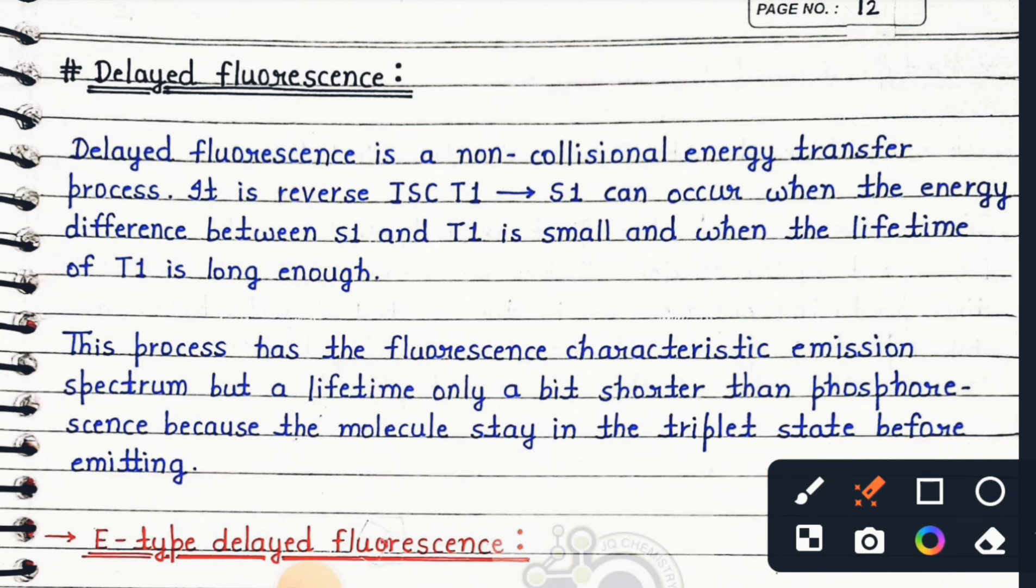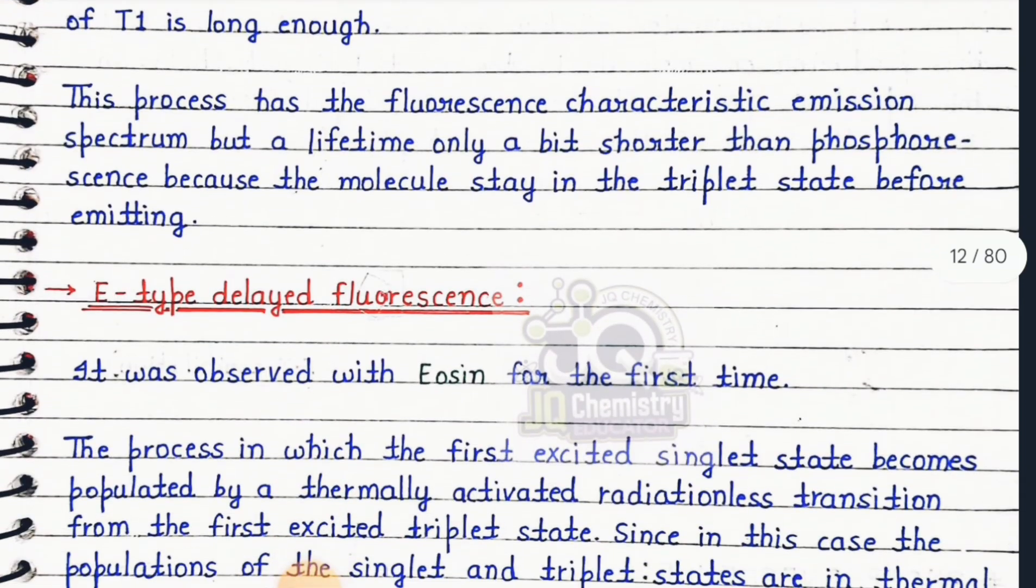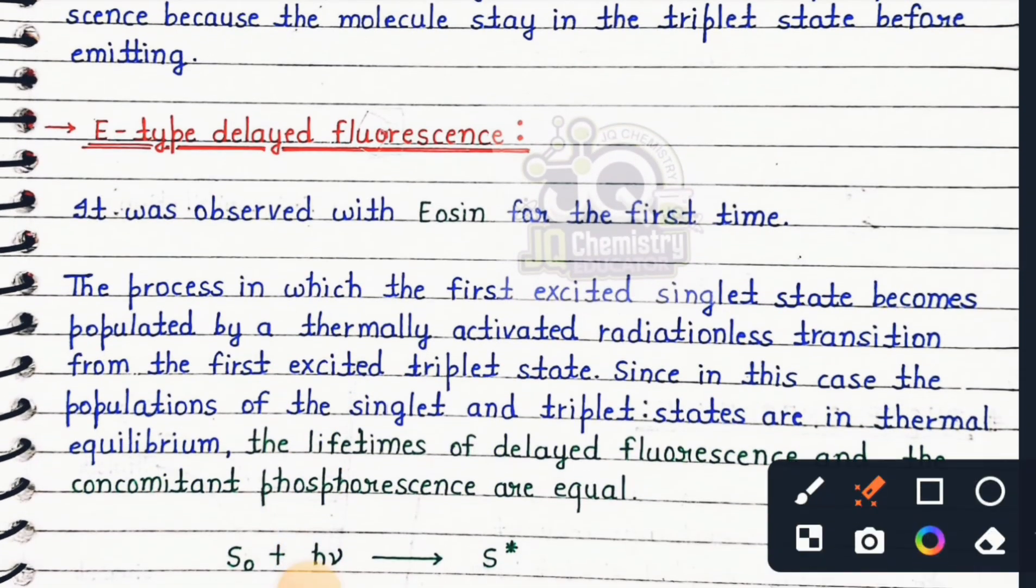This type of delayed fluorescence, E-type delayed fluorescence, was observed with Eosin for the first time. The process in which the first excited singlet state becomes populated by a thermally activated radiationless transition from the first excited triplet state. Since in this case the populations of the singlet and triplet states are in thermal equilibrium, the lifetimes of delayed fluorescence and the concomitant phosphorescence are equal.